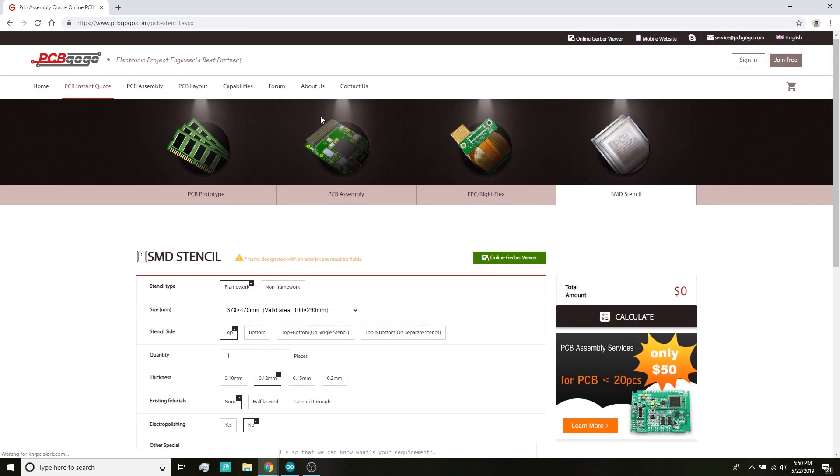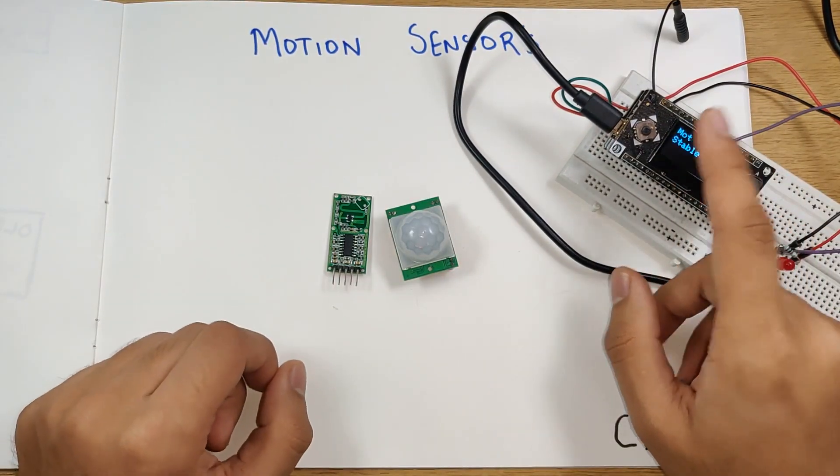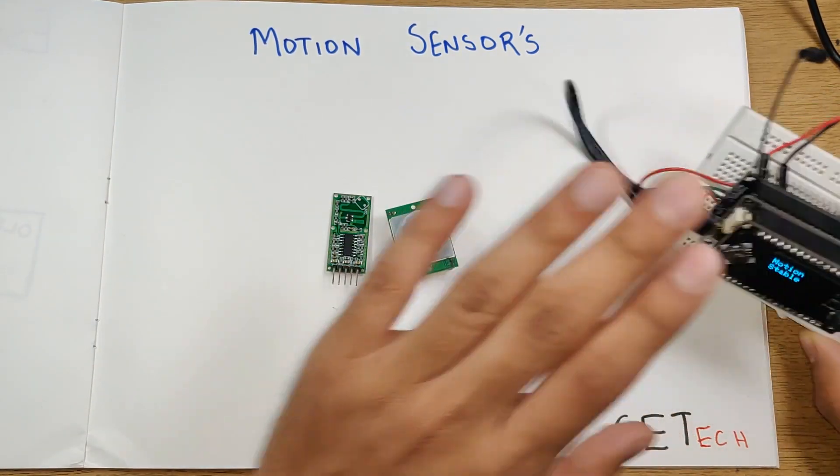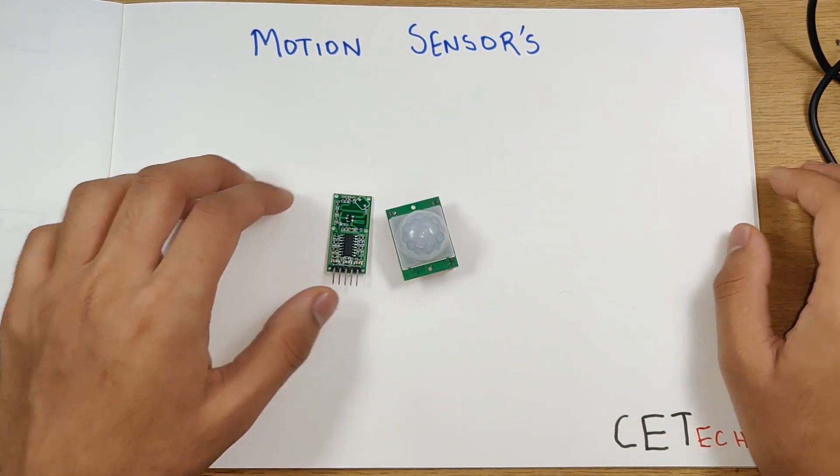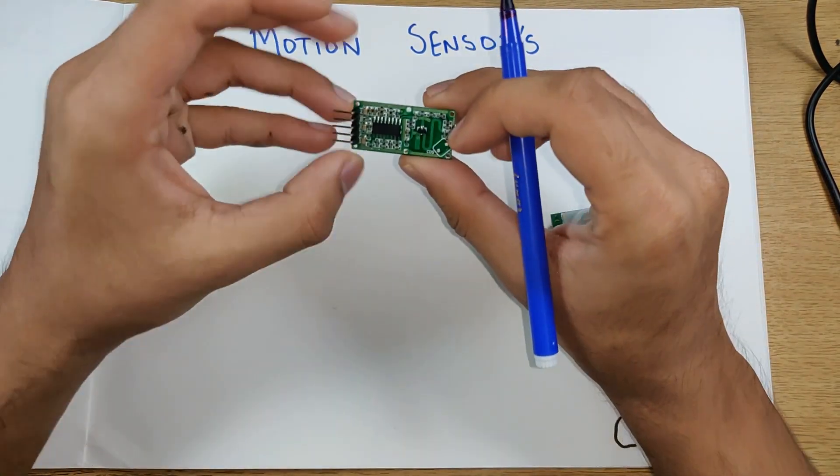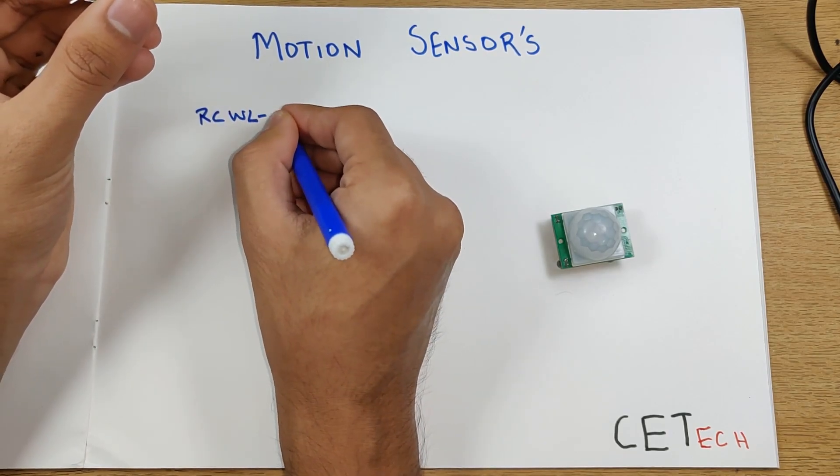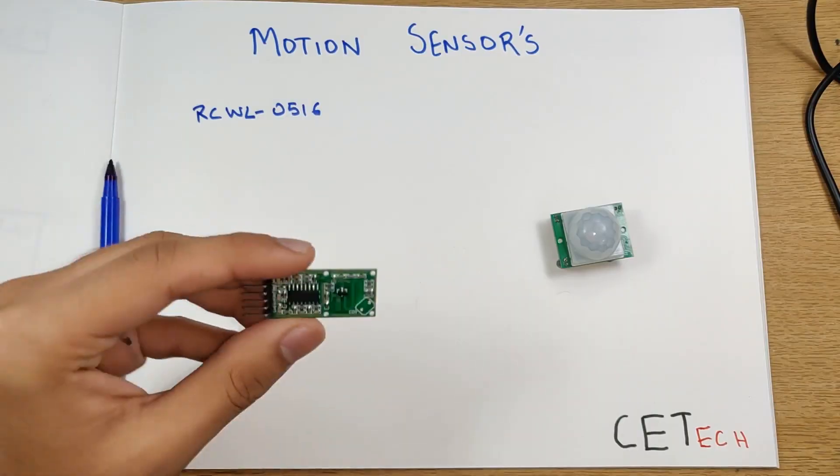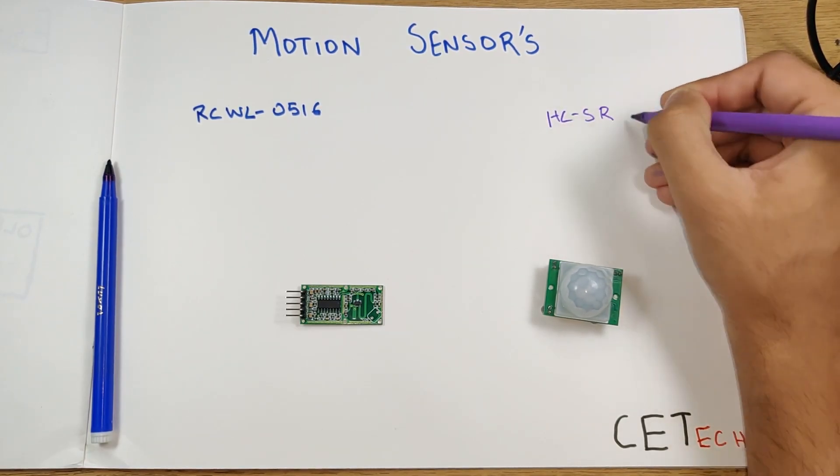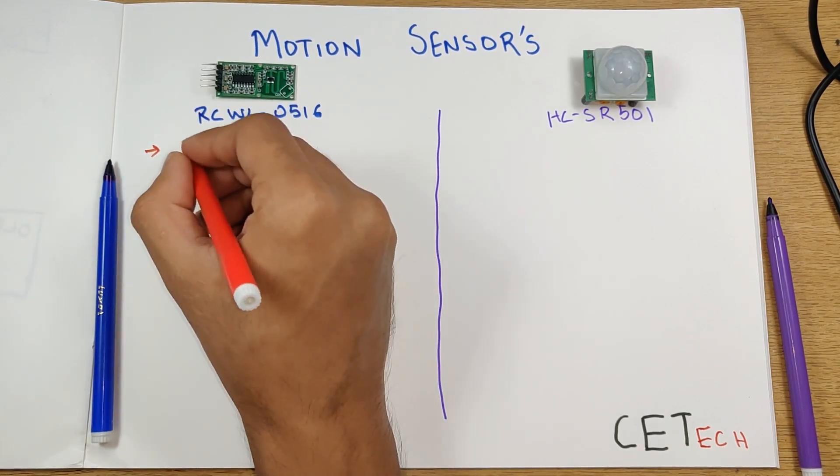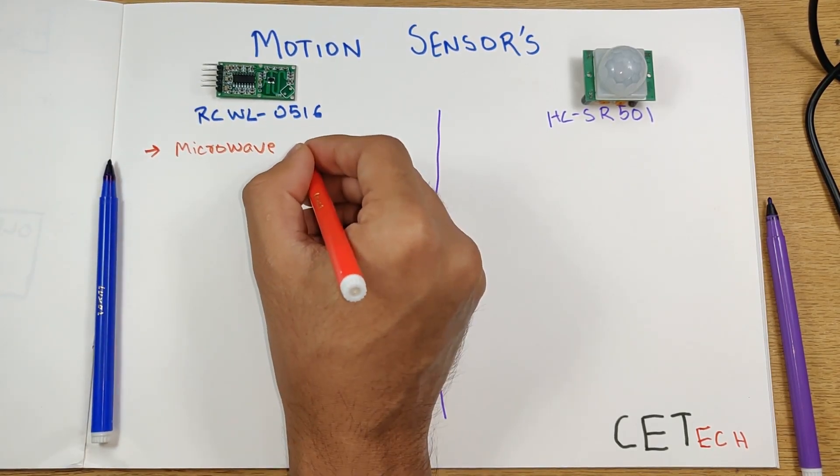Before jumping into the LoRa stuff and the microcontroller stuff of the system, we'll first learn about the motion sensors. First we'll see what this module is. This one is RCWL-0516, whereas this module is an HC-SR501. Both of them are obviously motion sensors and the technology on which these work is different. The RCWL is a microwave doppler sensor while the HC-SR501 is a PIR based sensor, that is passive infrared sensor.